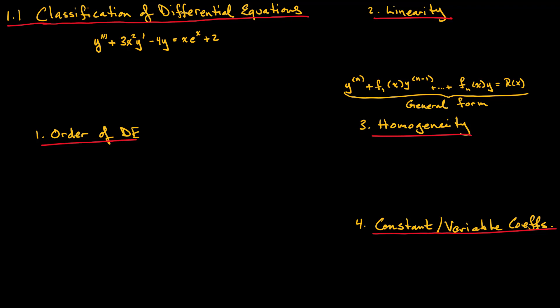In this course we are only interested in ordinary differential equations. An ordinary differential equation, or an ODE, is one where only ordinary derivatives with respect to a single independent variable are present — that is, there are no partial derivatives present in the equation. An ordinary derivative is something like dx, or dy by dt, or dt by dx.